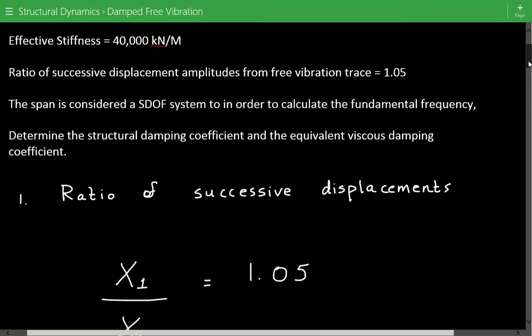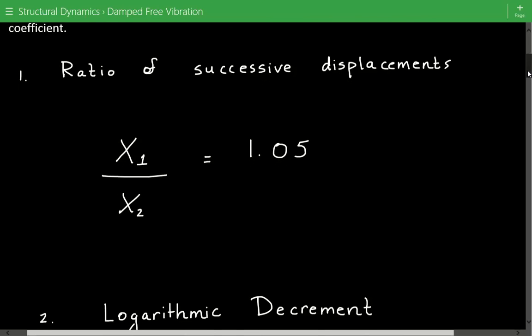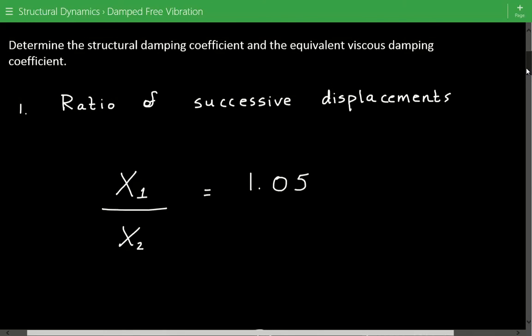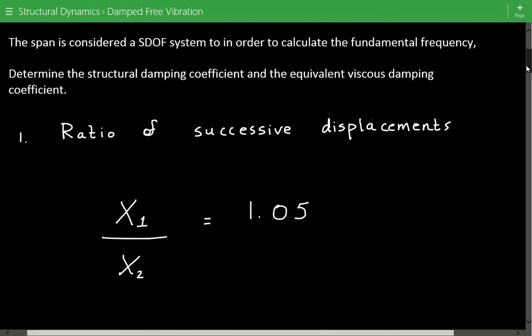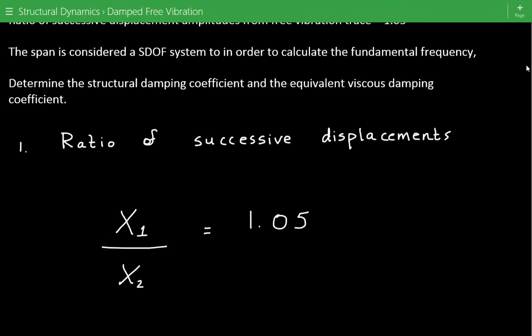The first step is we're going to calculate the ratio of the successive displacements. And in this case we actually don't have to calculate it. We know that x1 divided by x2, the ratio of the successive displacements, is equal to 1.05 based on the information that we were given in the problem.